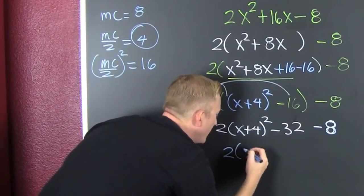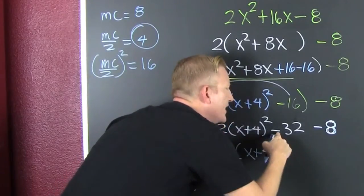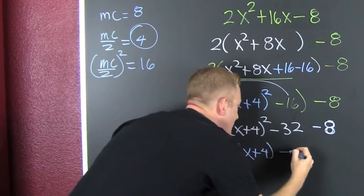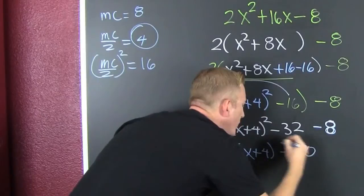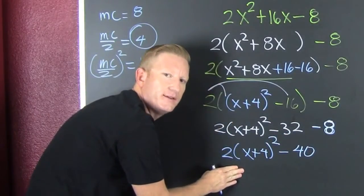So then when we complete the square, we have 2 times x plus 4 squared minus 32 minus 8 is minus 40. And then we've just completed the square to fit the form.